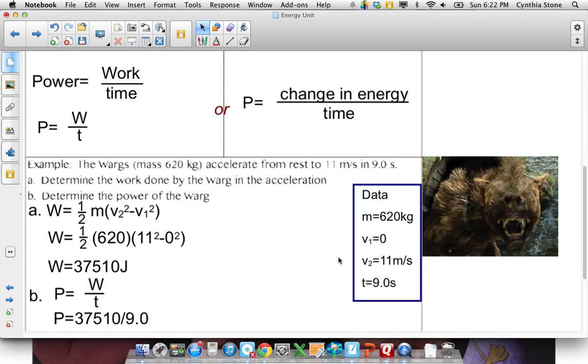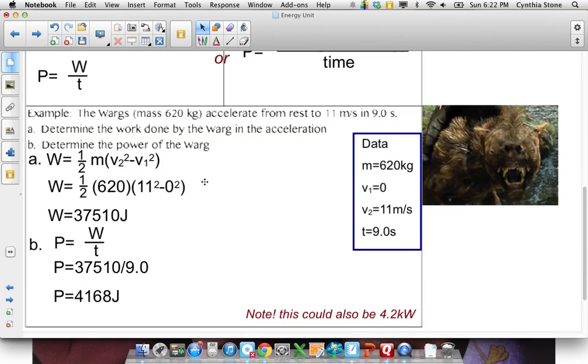So just an example using that formula. Well, it's actually using a couple formulas. We say the wargs have a mass of 620 kilograms. It accelerates from rest to 11 m/s in nine seconds. So first find the work. Well, writing down my givens, here's the information I have. If I want to find the work, remember, it's like the Legolas question.